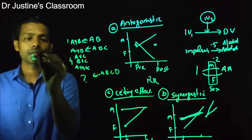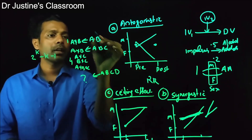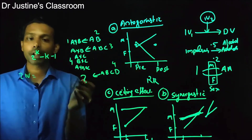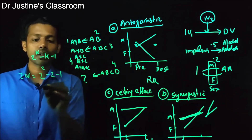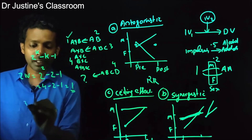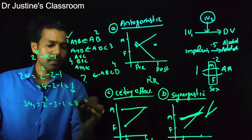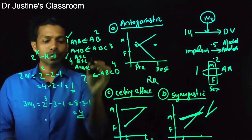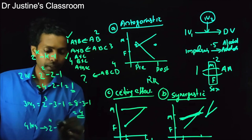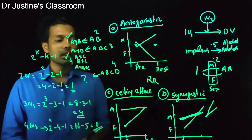The equation generally used to calculate how many interactions are possible is: 2 raised to k, minus k, minus 1 — where k is the number of independent variables. For 2 IVs: 2² − 2 − 1 = 4 − 3 = 1 interaction. For 3 IVs: 2³ − 3 − 1 = 8 − 4 = 4 interactions. For 4 IVs: 2⁴ − 4 − 1 = 16 − 5 = 11 interactions. So this formula tells you how many interaction effects are possible based on the number of independent variables.